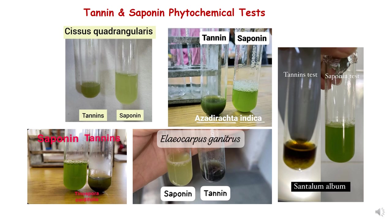For Tinospora cordifolia (giloy), both the saponin test and tannin test are positive, but with less precipitate compared to Azadirachta indica. For Elaeocarpus ganitrus (rudraksha), the saponin test is positive with a lot of foam formation, and the tannin test is also strongly positive with a lot of green precipitate at the bottom, including some granules sticking to the test tube walls.